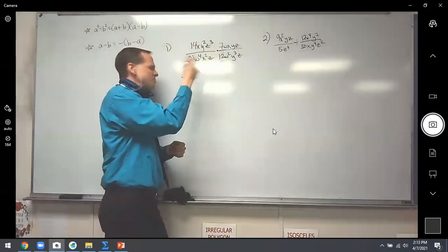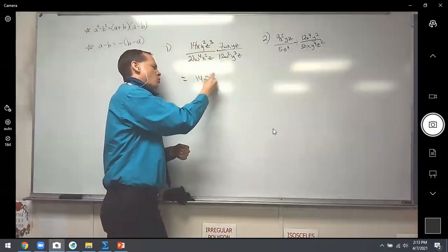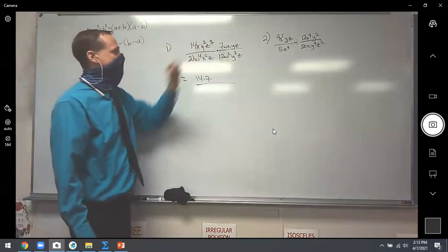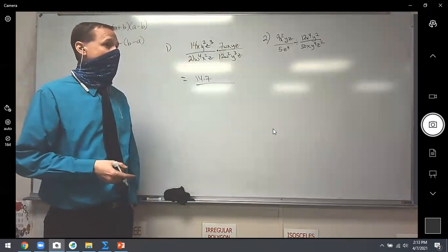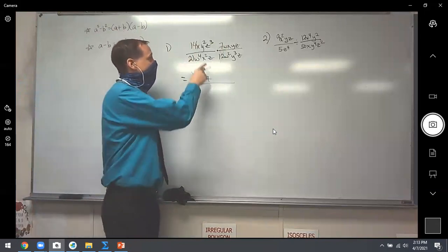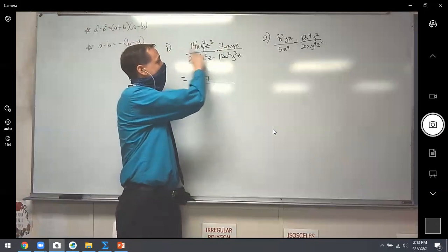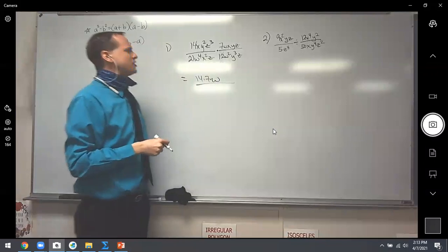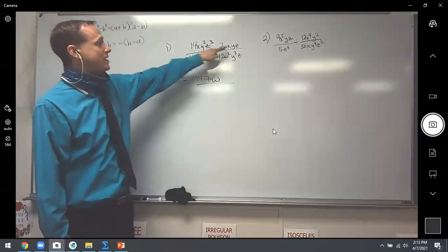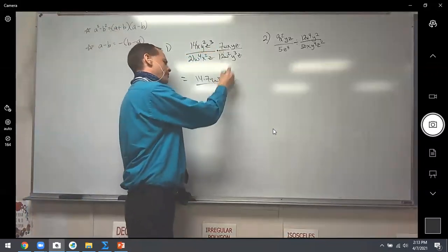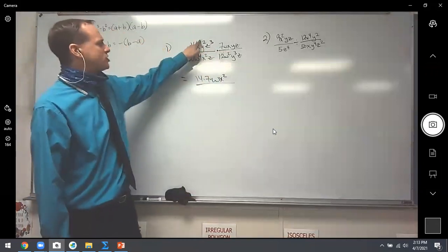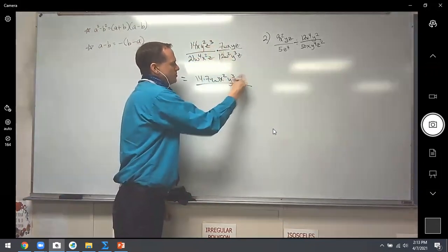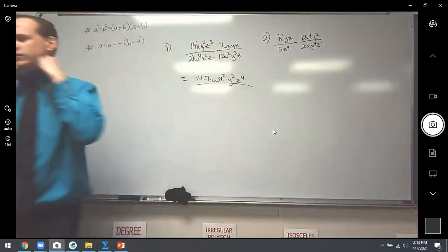So I've got 14 times seven — I'm just going to leave it like that for now. We could figure out what 14 times seven is, but forget that. I've got lots of letters floating around too. Going in alphabetical order: W comes first, there's one W. And X's — I see an X here and an X here, and X times X is X squared. And I see a Y squared times a Y — that's a Y cubed. And I see a Z cubed times a Z — that's a Z to the fourth.